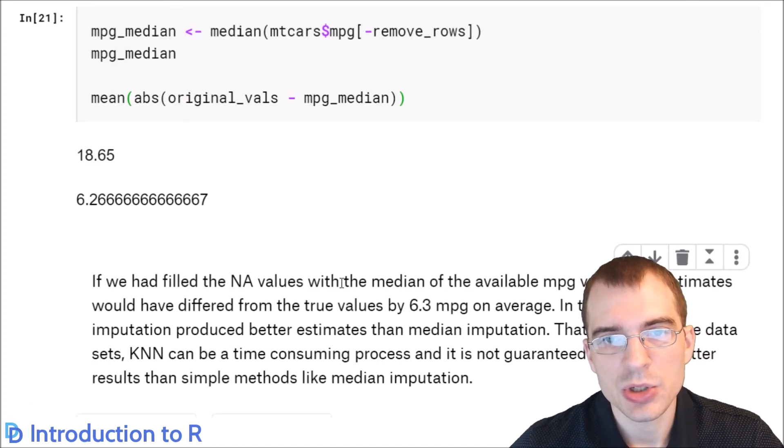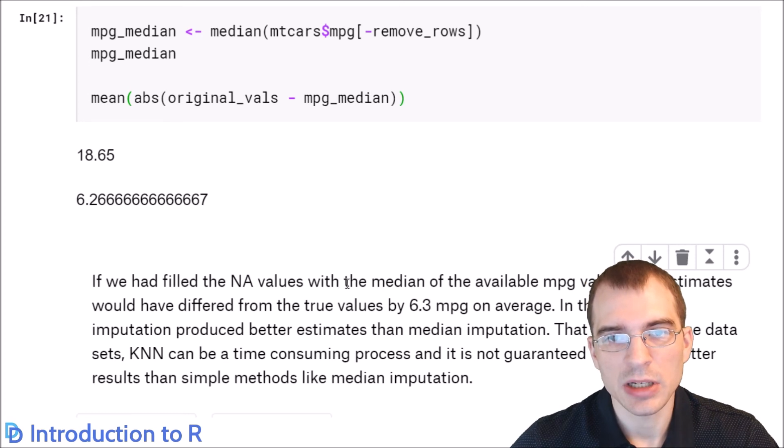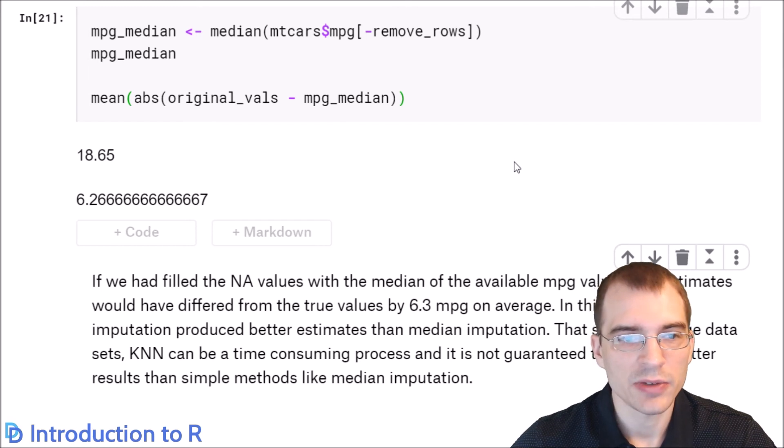Filling missing values using something as simple as just the median or mean is a lot easier and faster than running something like a KNN model, which can actually take a very long time if you have a large data set. So it's definitely a trade-off considering whether you want to do something like that in your pre-processing steps. But if you have a lot of missing data and it's important to get them filled in with as much accuracy as possible, you definitely want to consider using an imputation method that's a little bit more complicated but might provide better results than just filling in a single value.